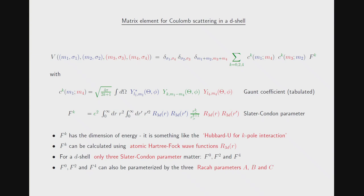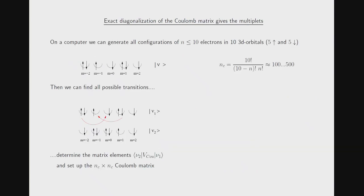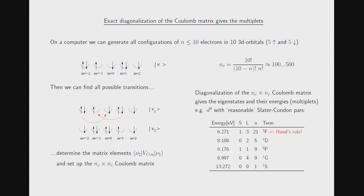The F^K can be calculated using atomic Hartree-Fock wave functions, and for a D shell only three matter: F^0, F^2, and F^4. These three numbers can also be expressed in terms of the three Racah parameters — that's just a change of notation. Once we know these F^K, we generate all configurations of n electrons in 10 orbitals; their number is given by the binomial coefficient, a couple of hundred. We enumerate all possible scattering processes, calculate matrix elements, then diagonalize to get the energies.